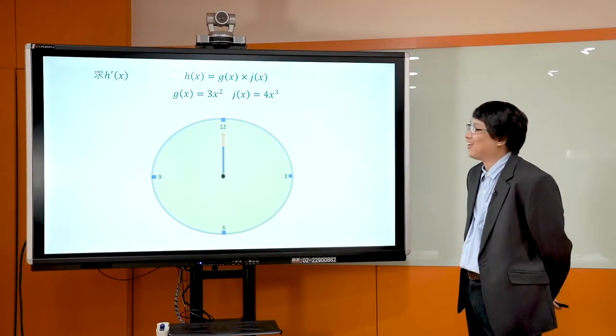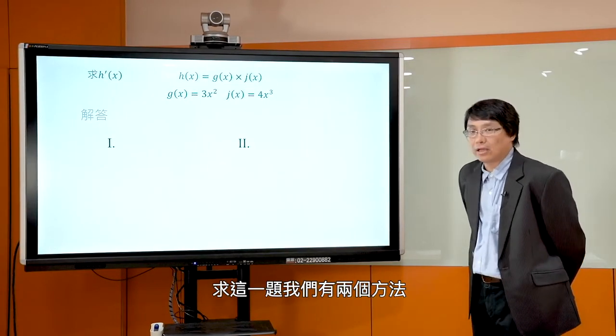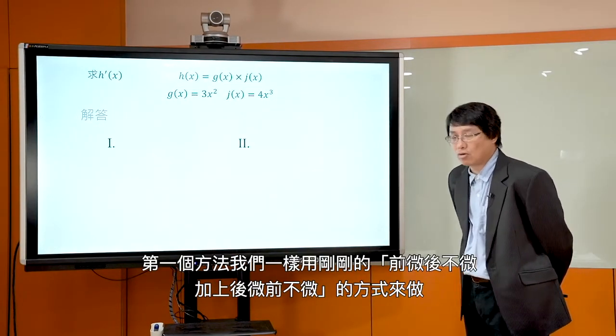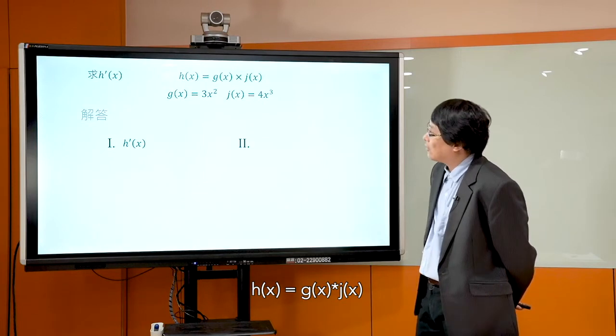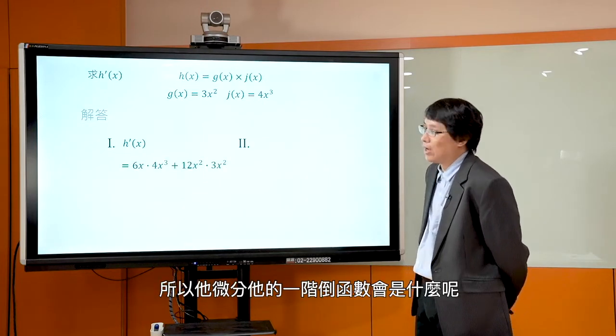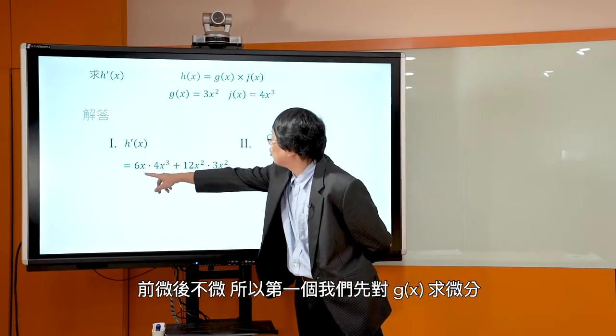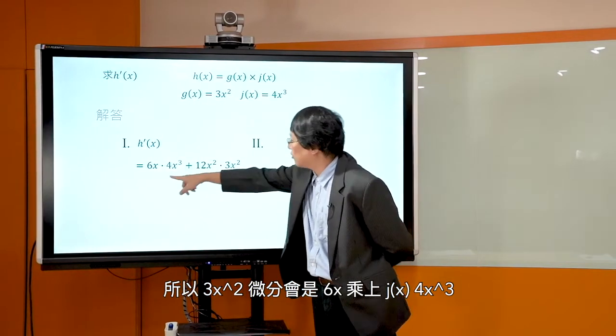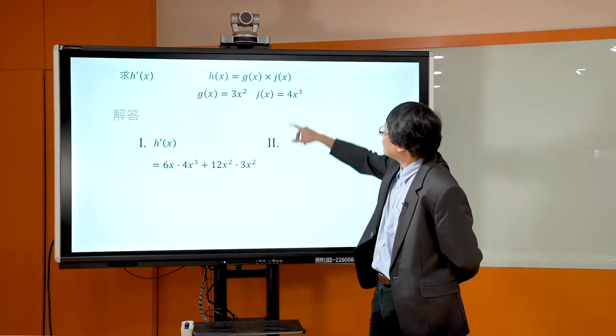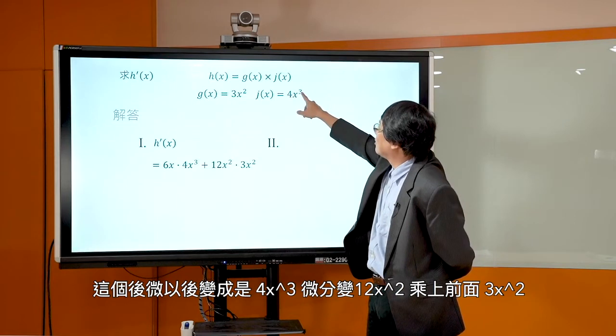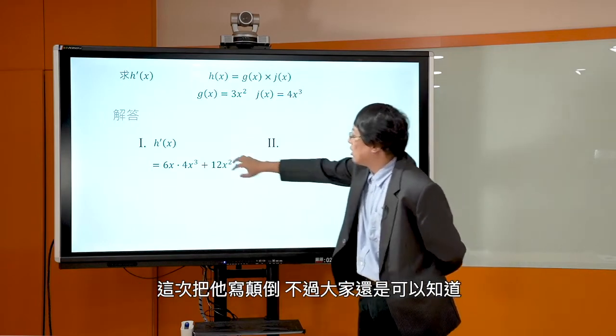时间到，不知道大家有没有做出来呢？我想这一题应该比较简单一点。那我们来讲解答是什么。这个题目我们有两个做法。第一个做法就是你就用前微后不微加上后微前不微，所以你就一样做 g(x) 先微分，3x² 微分是6x，乘上 j(x) 4x³ 不微分，加上后微前不微，所以后微，4x³ 微分会变成 12x²，乘上前不微 3x²。这是第一个做法求出来。